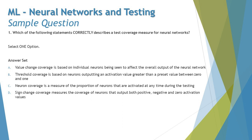Option A says: value change coverage is based on individual neurons being seen to affect the overall output of the neural network. Now, value change coverage is not correct here because it's actually a measure of the proportion of neurons activated where their activation values differ by more than a preset change amount. It does not concern itself with the overall output of the neural network, which is what option A is claiming.